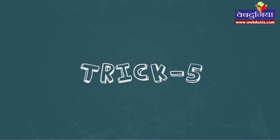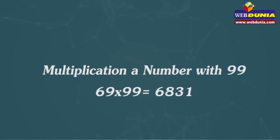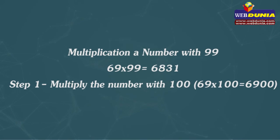Trick 5: Multiplication of a number with 99. 69 multiplied by 99 equals 6831. Step 1: Multiply the number with 100, that is 69 multiplied by 100 equals 6900.